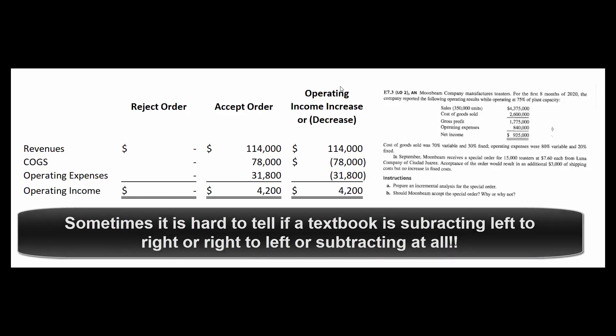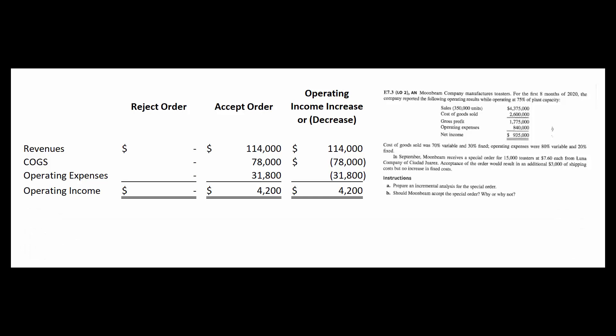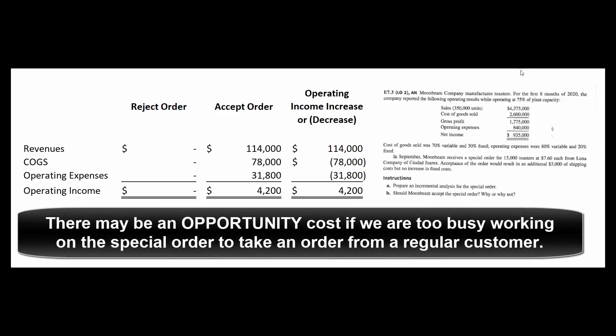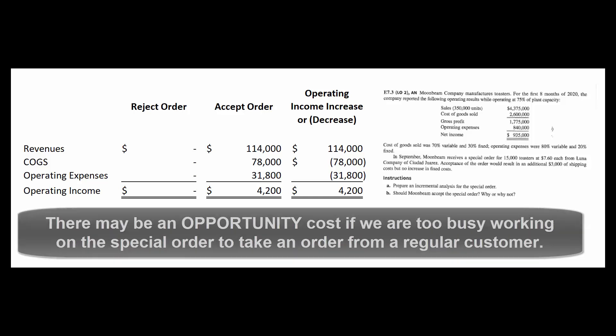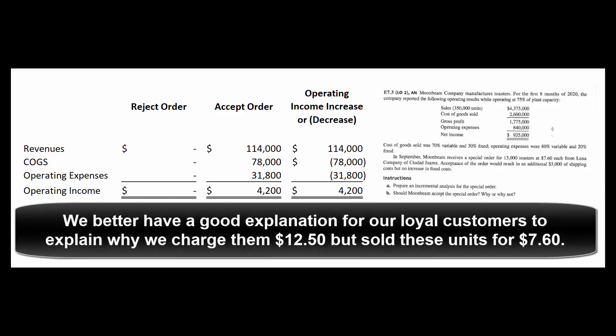A couple of qualitative things to keep in mind. If a regular customer comes in and wants to do business with us and we're too busy with this special order, we're going to lose the opportunity to serve our regular customers — so there's an opportunity cost to doing this special order. Most importantly, what will we say to our existing customers if they find out that we're selling toasters to Mexico for $7.60 when we're charging them $12.50? We've got to have a good explanation, because they will find out, even if we don't have our brand name on them.